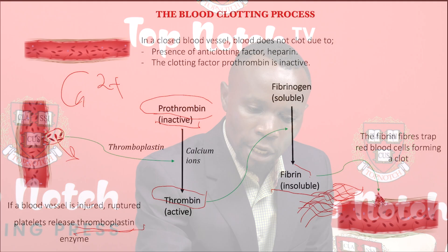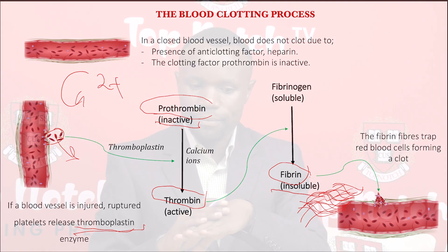Once you have the meshwork of fibers forming — that insoluble fibrin meshwork — it traps the blood cells. The main blood cells that are abundant in blood are the red blood cells. By trapping the red blood cells, it forms a solid substance on the injured part, and that is what forms a clot.